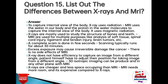Question 15: List the differences between X-rays and MRI. Answer: To capture an internal view of the body, X-rays use radiation, while MRI uses the water in our body and the protons in water molecules, using magnetic radiation. X-rays are mostly used to study bones and teeth. MRI is used for multiple purposes like analysis of soft tissue, spinal cord injury, ligament and tendon injury, brain tumors, etc. An X-ray scan is done in a few seconds, while MRI scanning typically runs for about 30 minutes.